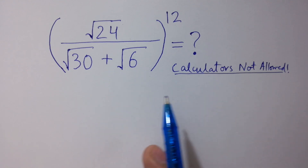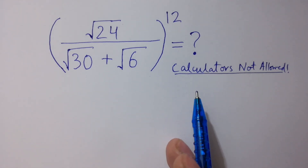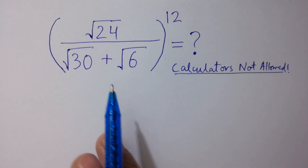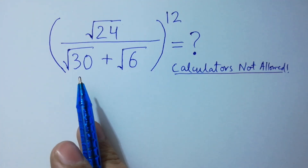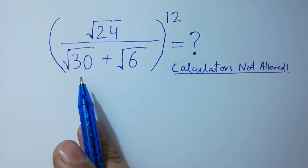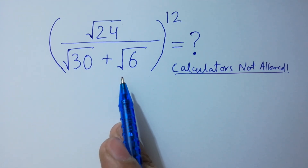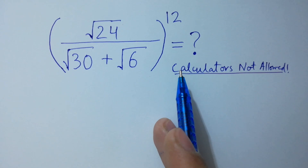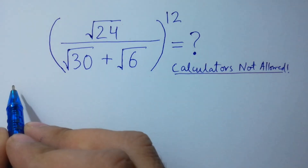Hello friends, calculators are not allowed. We need to find: square root of 24 over square root of 30 plus square root of 6, to the whole power 12. Let's have a solution.